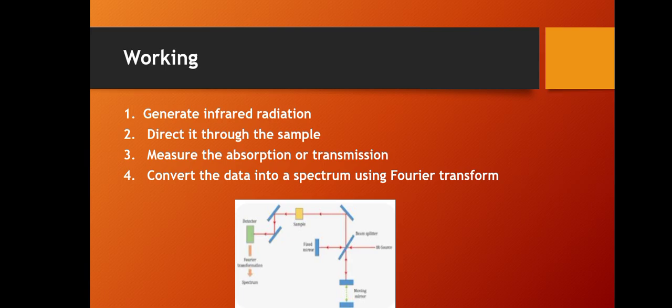Working: The IR source produces IR radiation which hits the sample and is divided into two compartments — sample and reference cell. One mirror is movable and the other is fixed. The instrument generates infrared radiation, directs it through the sample, measures the absorption or transmission, and converts the data into a spectrum using Fourier transform.